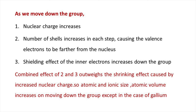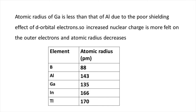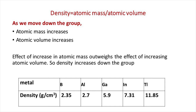The combined effect of increasing number of shells and shielding effect outweighs the shrinking effect caused by increased nuclear charge, so atomic size increases down the group. However, on moving from aluminium to gallium, atomic radius decreases because of the poor shielding effect of d orbital electrons, so the increased nuclear charge is more felt on the outer electrons in gallium. The shielding effect of penultimate shell electrons of indium and thallium is also poor, so only a small increase in atomic size is seen from gallium to indium to thallium.